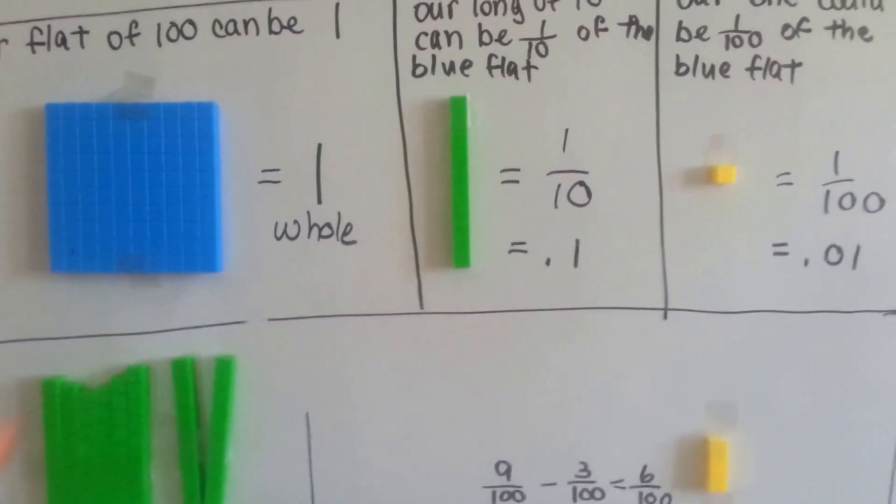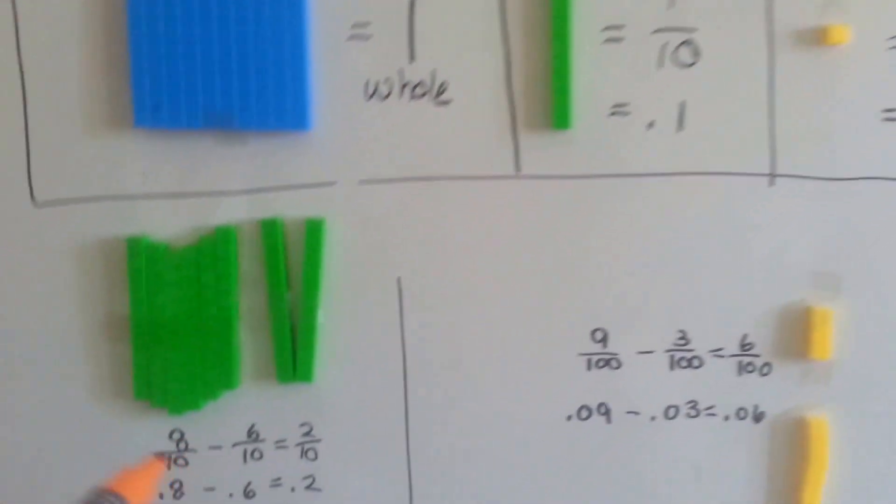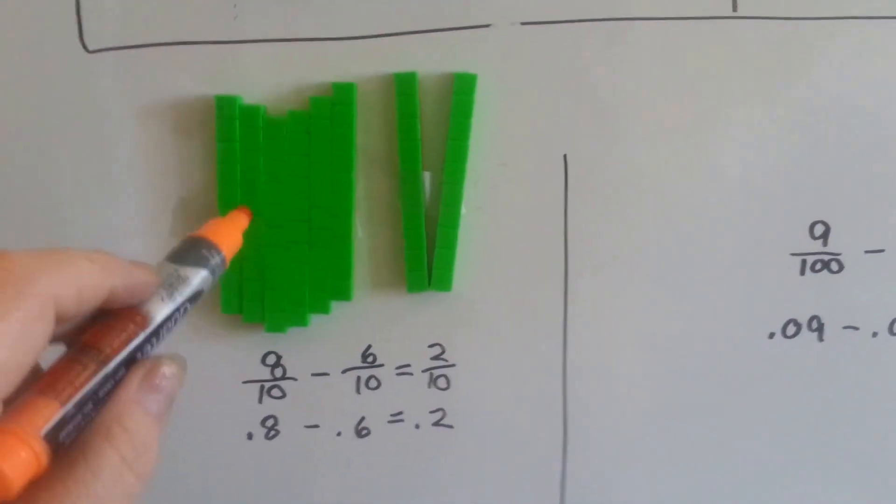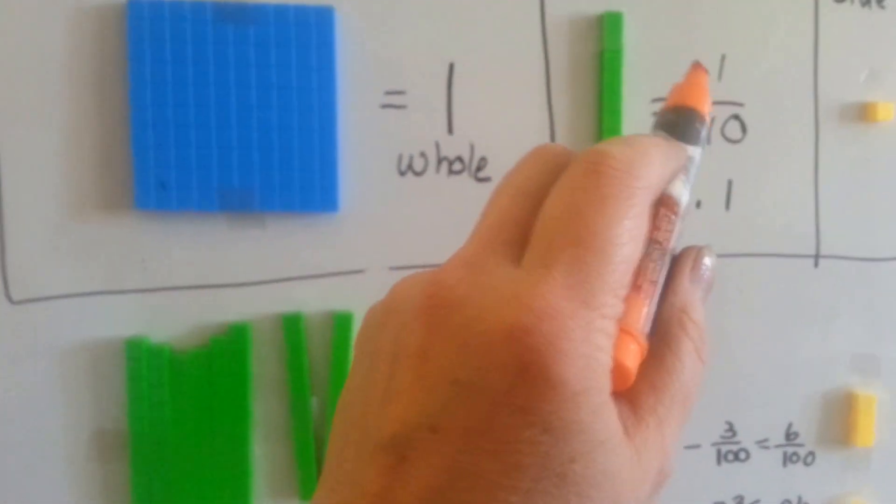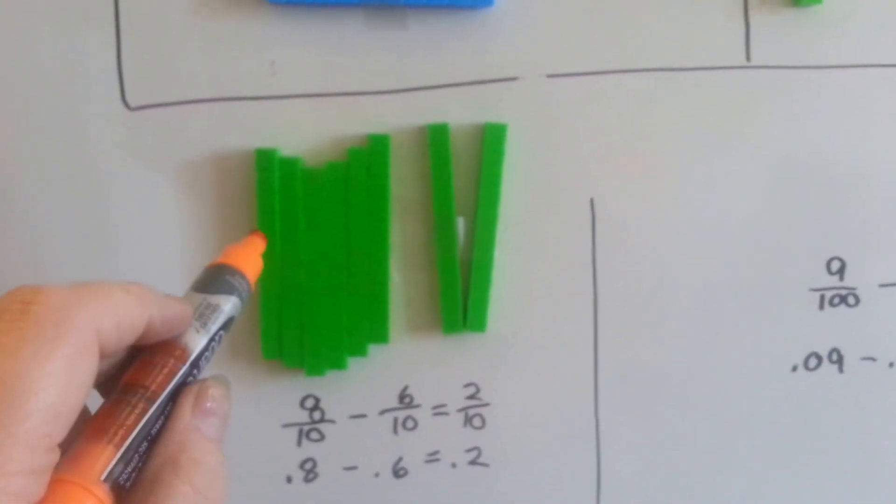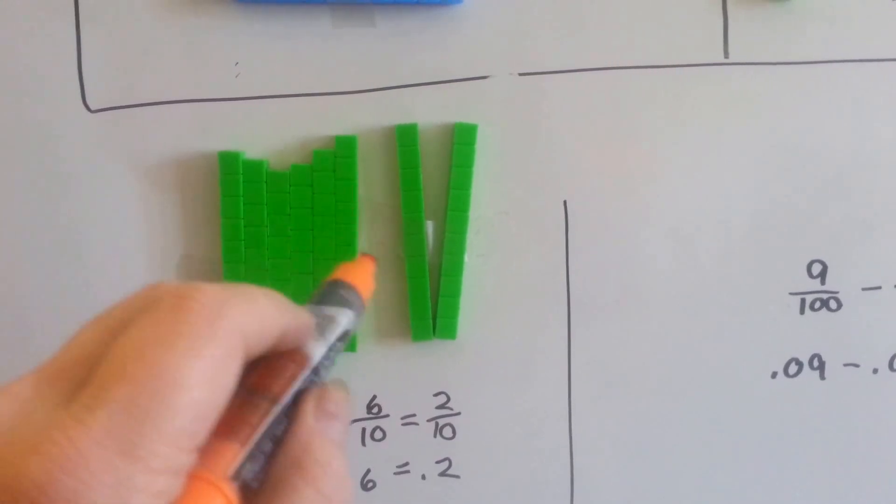Then we can subtract, we can use these to help us subtract. So if I had eight tenths, remember the green ones are one tenth, so if I had eight of them: one, two, three, four, five, six, seven, eight.